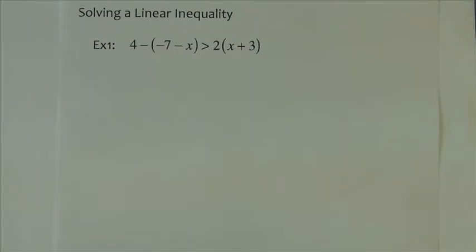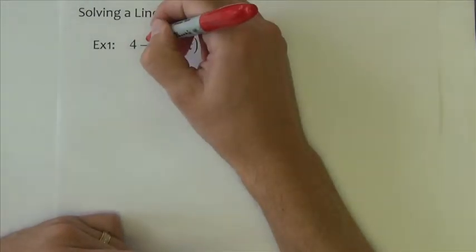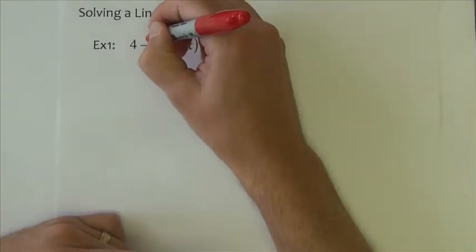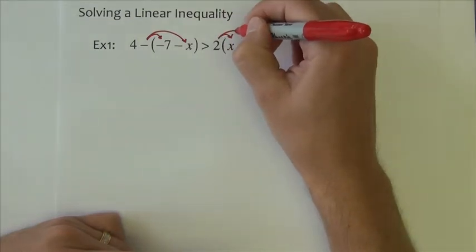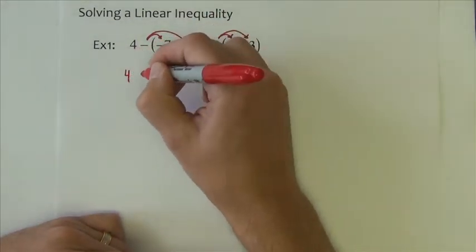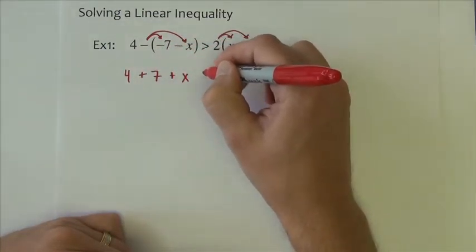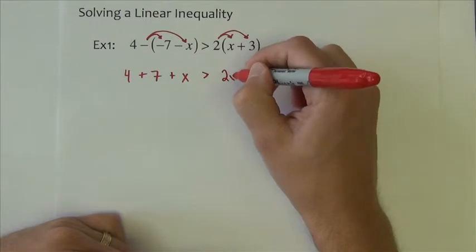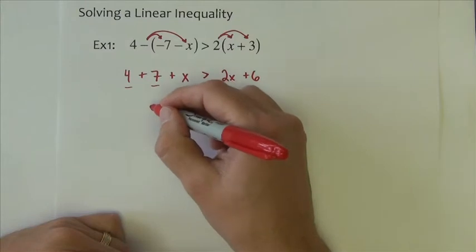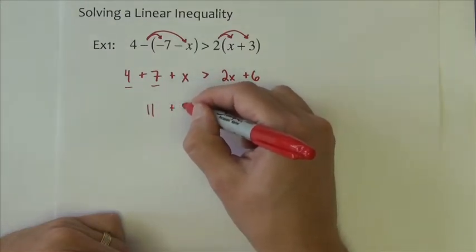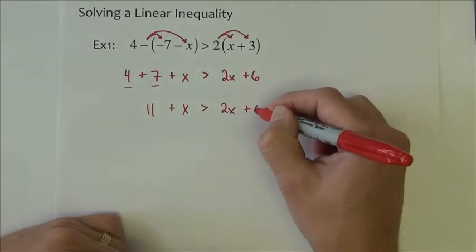If we find it in the problem, we'll note it. But I begin this problem the same as I begin any problem. This one requires a distributive property. So the minus sign distributes there, and the 2 distributes here, giving me 4. That'll become plus 7, plus x is greater than 2x, plus 6. I'm going to combine these two numbers, giving me 11, plus x is greater than 2x, plus 6.